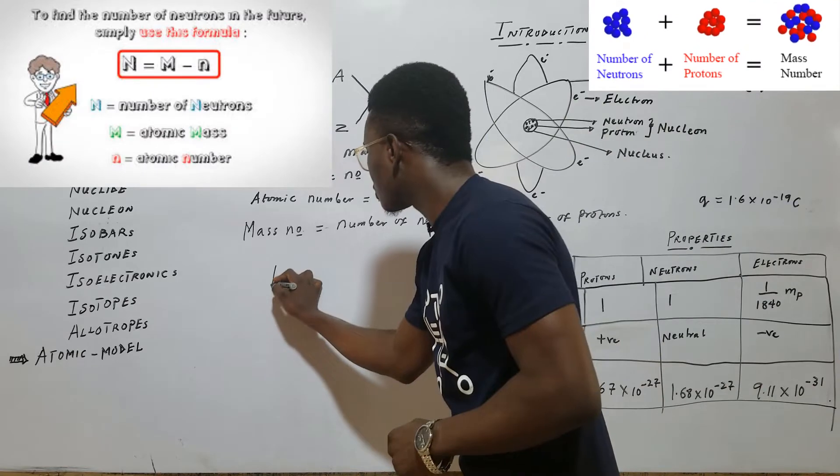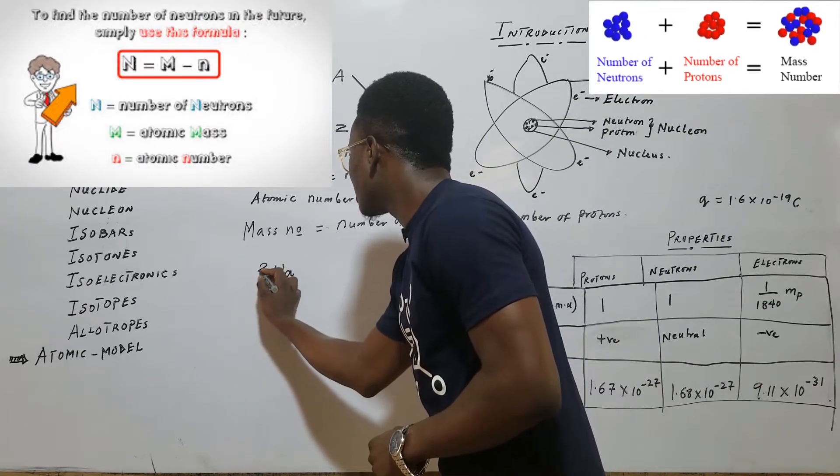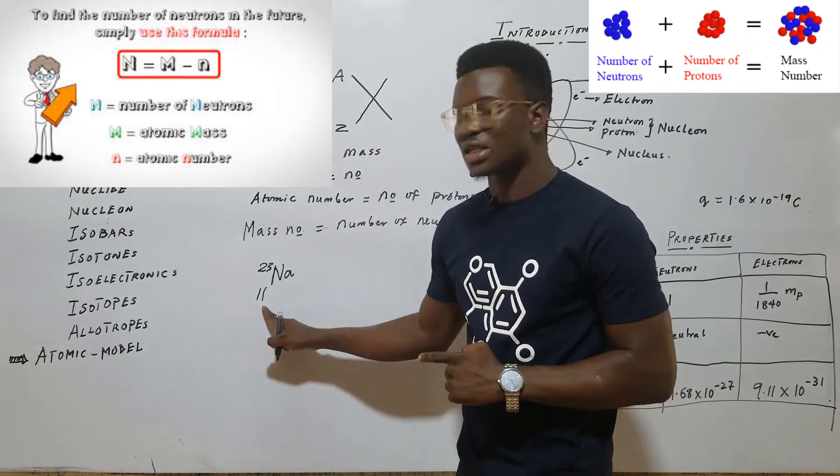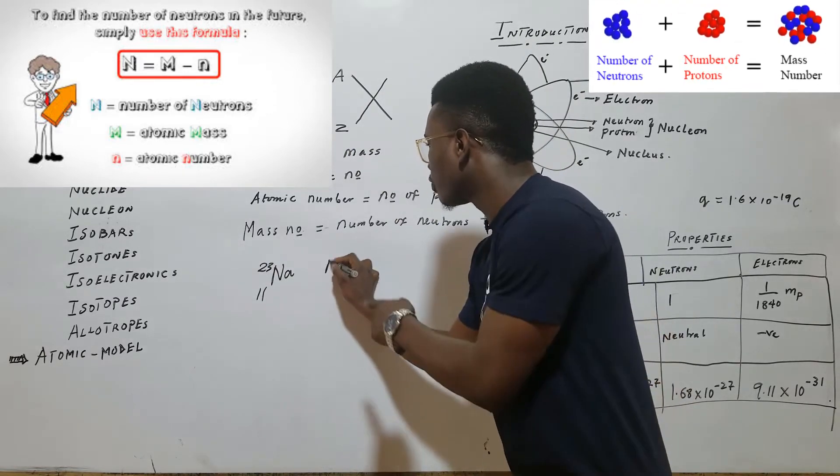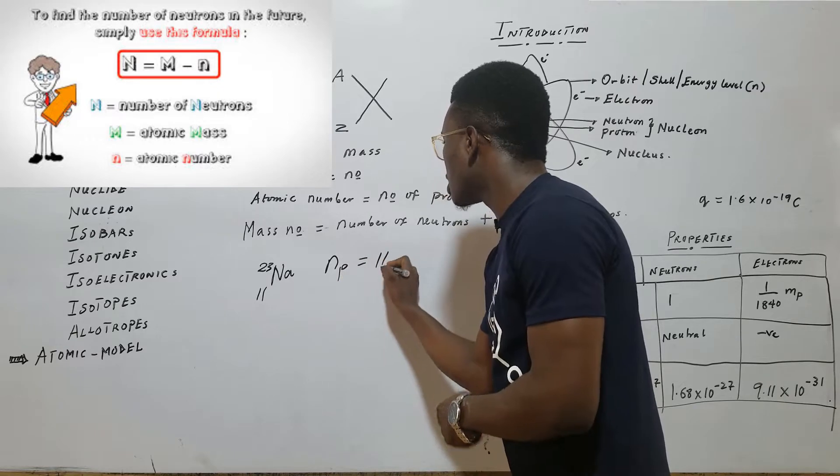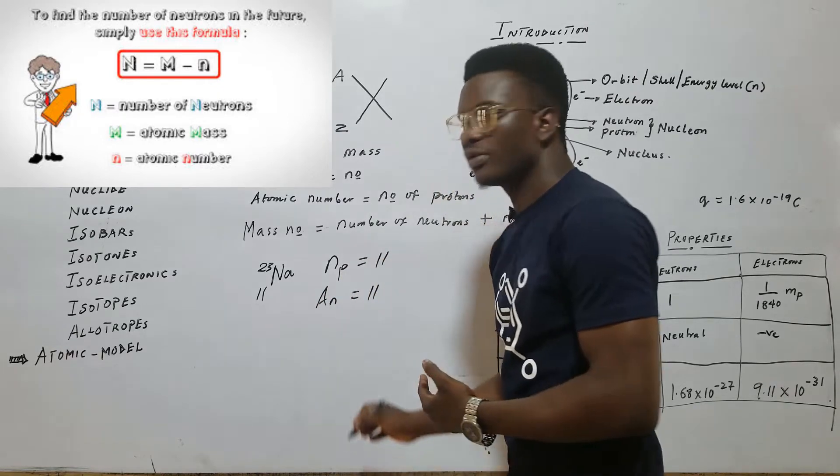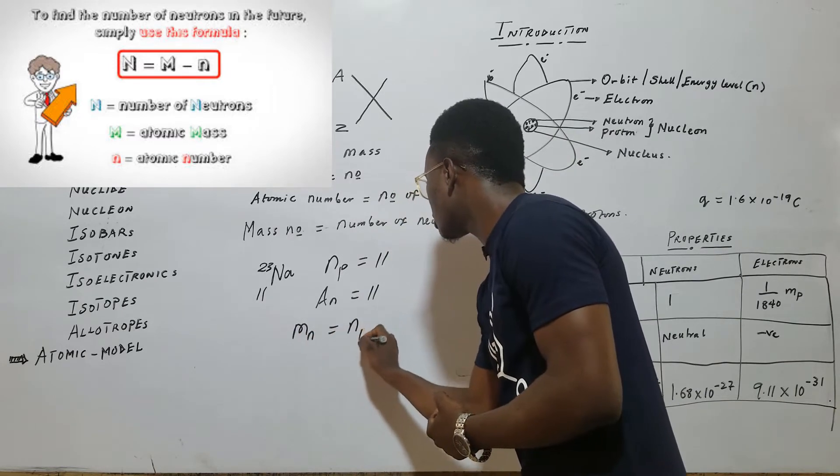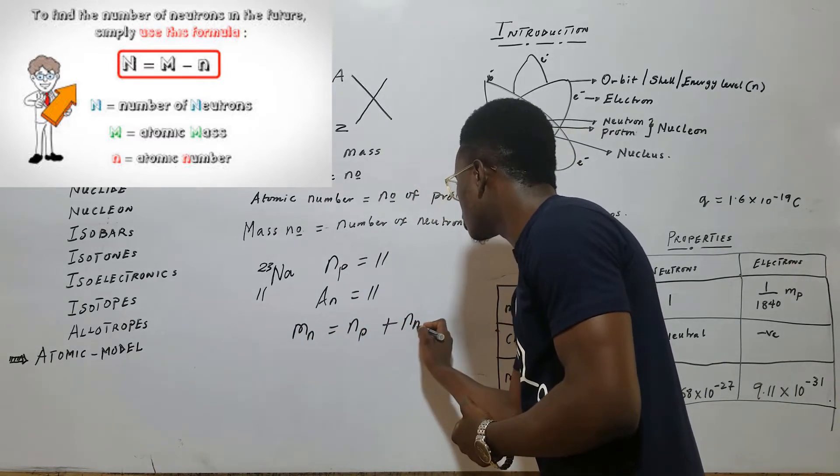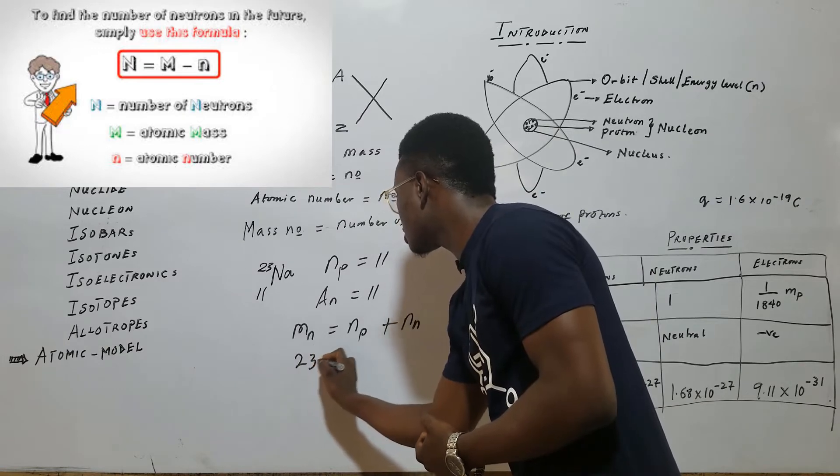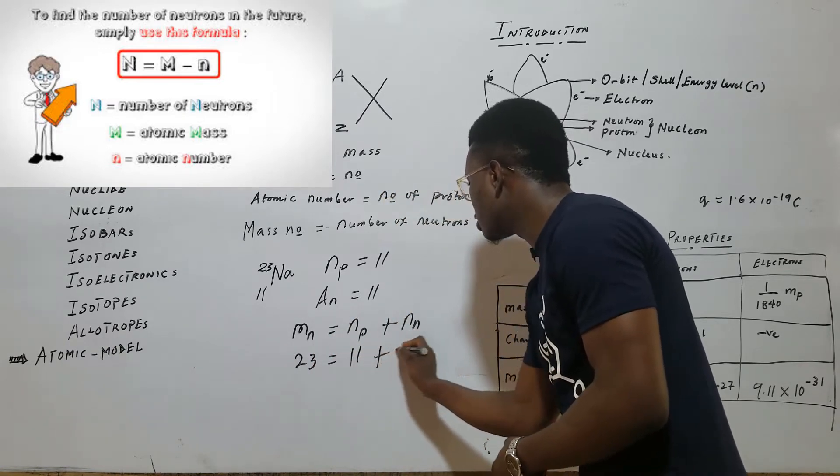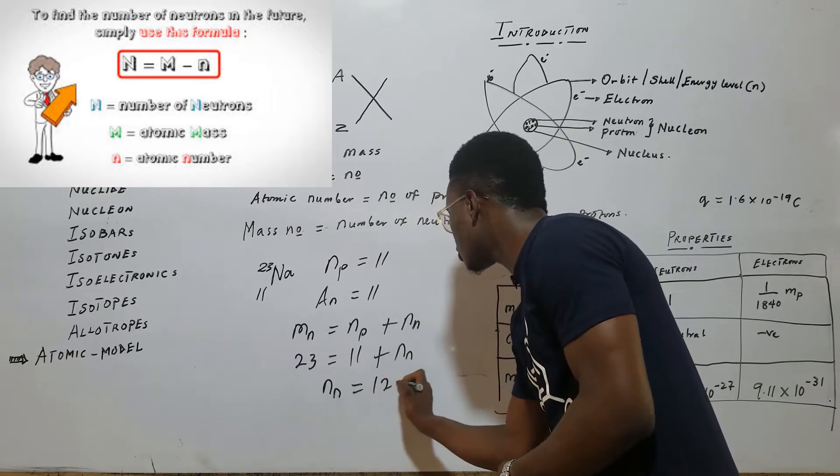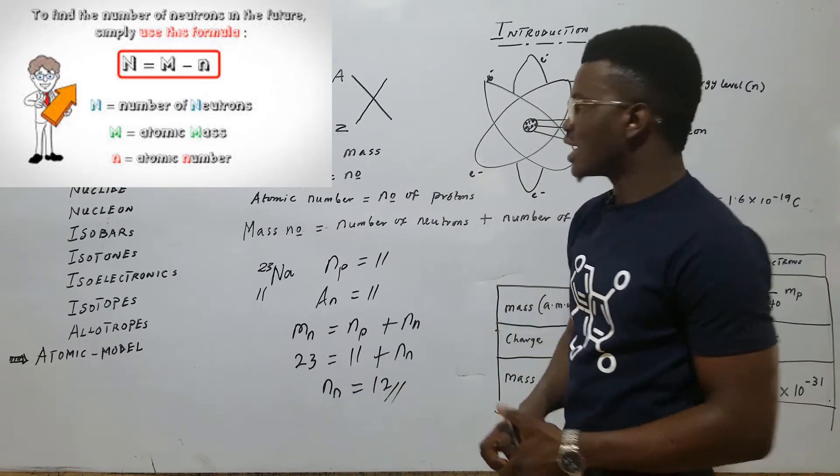For example, if I have sodium 23, atomic number of 11. The atomic mass is 23, the atomic number is 11. So, the number of protons for this is equal to 11. The mass number, which is equal to number of protons plus number of neutrons, is 23. Atomic number is 11 plus the number of neutrons. So, this shows that the number of neutrons is equal to 12.